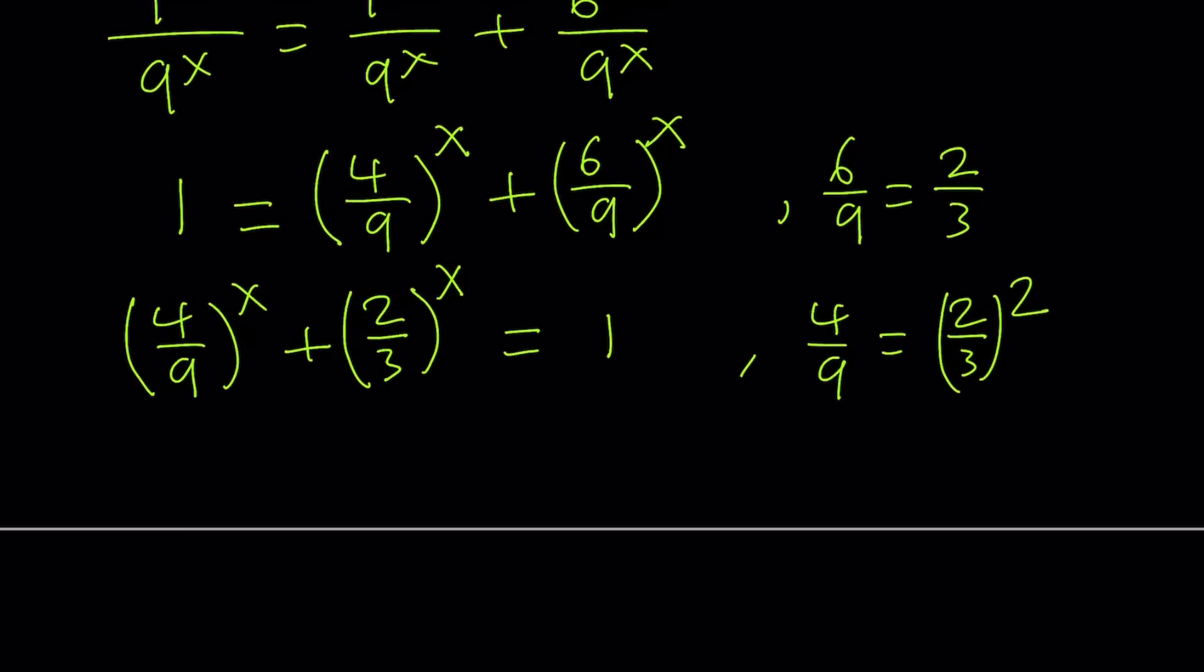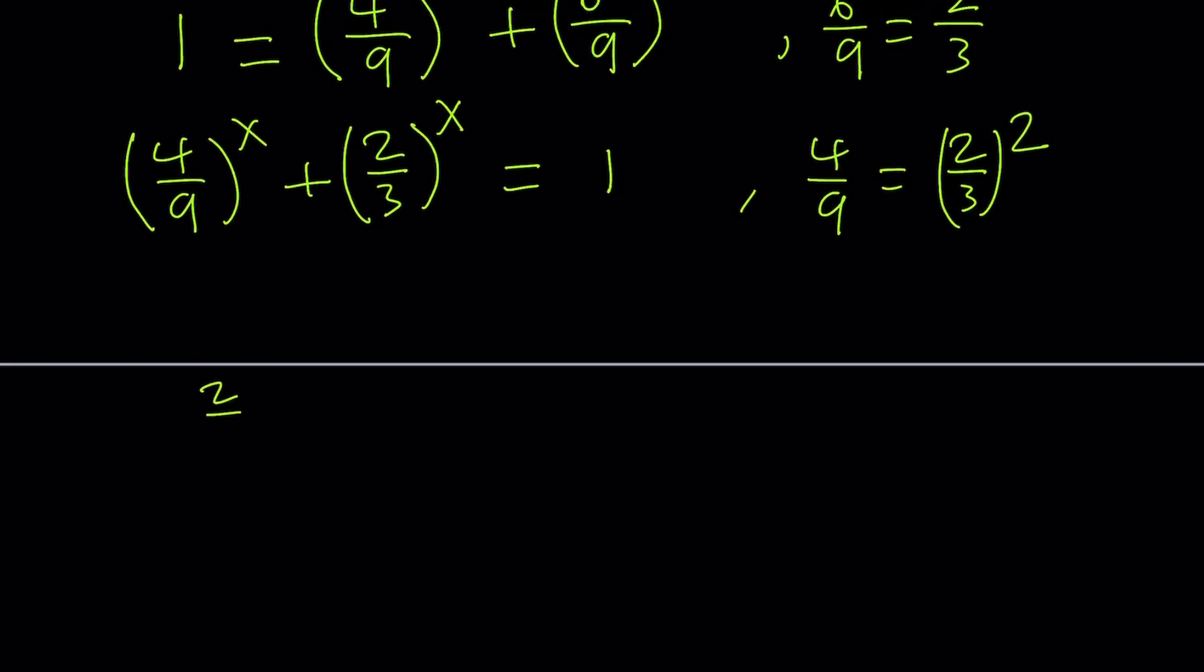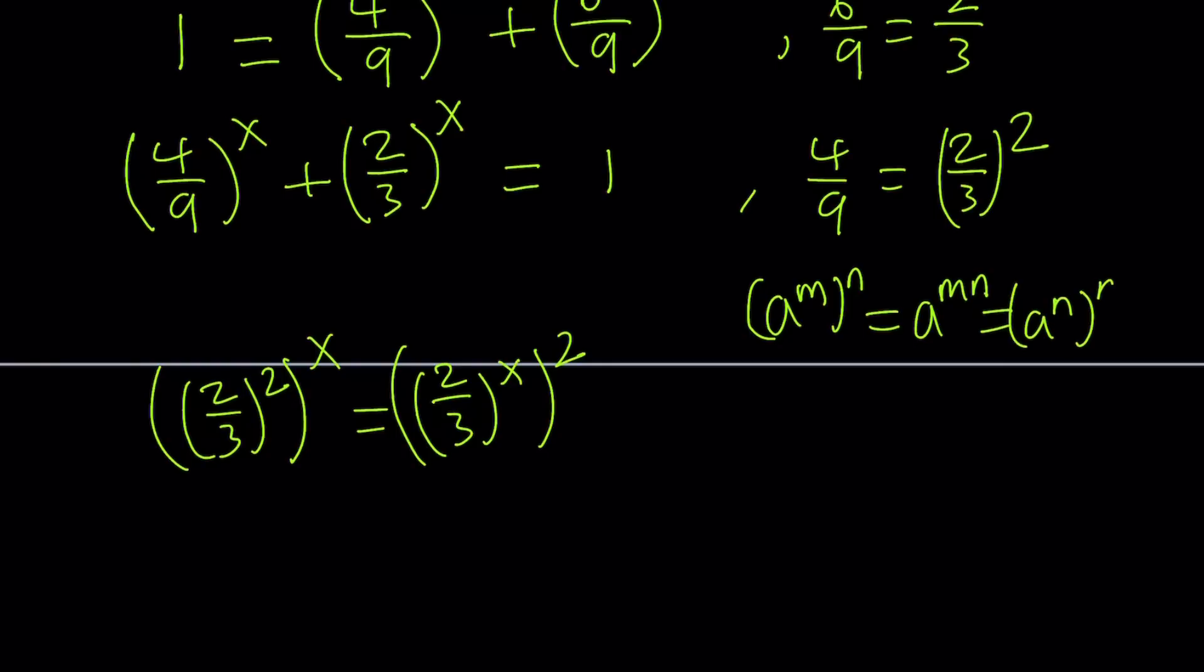If you write 4 9ths to the power x as 2 thirds squared to the power x, that can be written as 2 thirds to the power 2x or 2 thirds to the power x squared. In other words, if you have a to the power m to the power n, it can be written as a to the power mn or a to the power n to the power m, because this is a to the power nm, which is the same as mn. You can switch these exponents around because they are being multiplied.